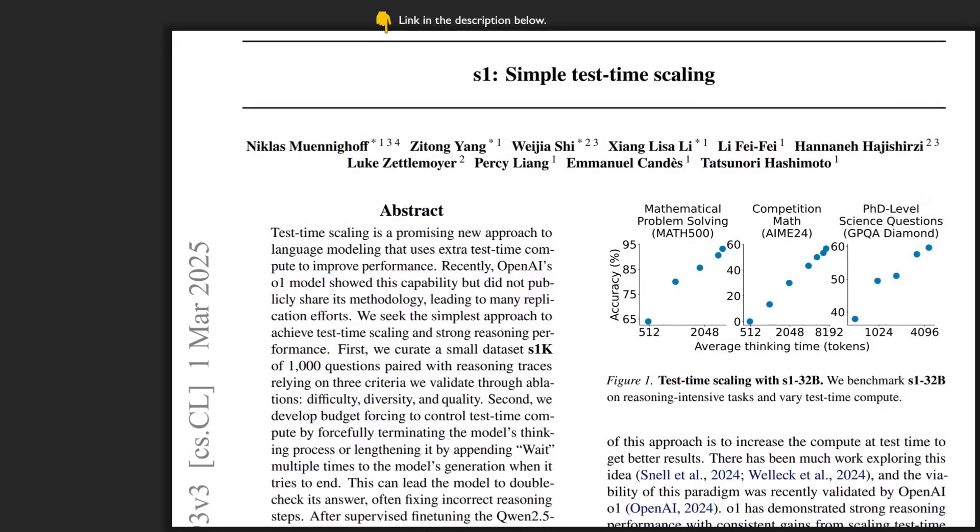You don't need millions of examples to make LLMs output reasoning chains like DeepSeek R1 can. In fact, this paper shows you only need a thousand well-chosen examples. The authors also use a simple test-time compute trick to make sure the model makes the best out of those reasoning chains.